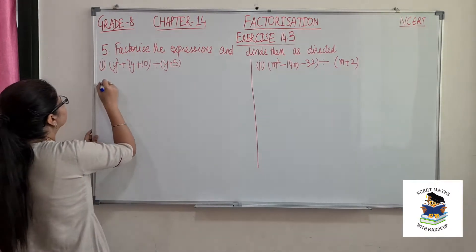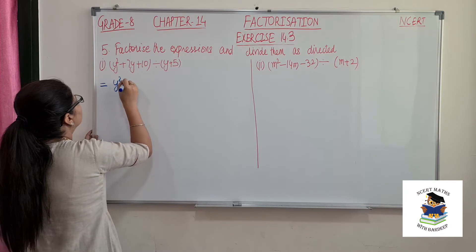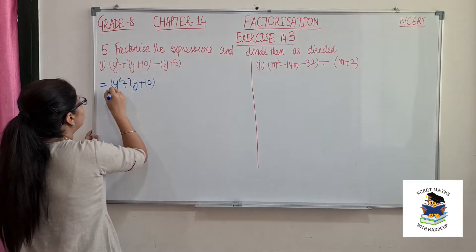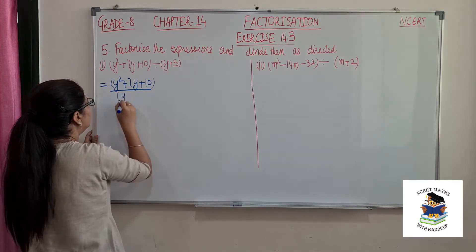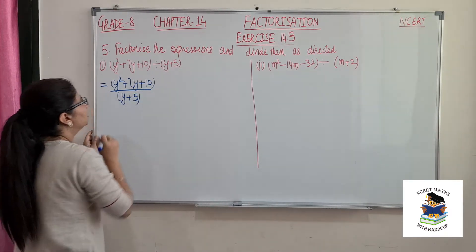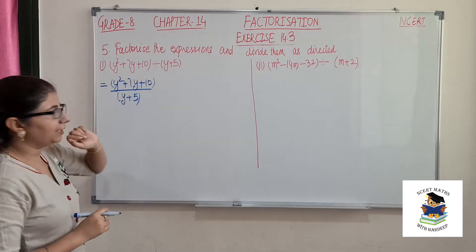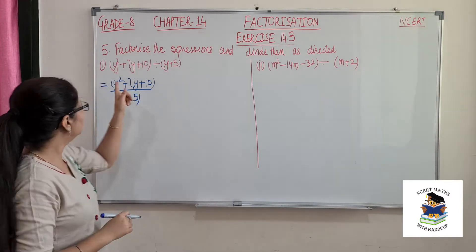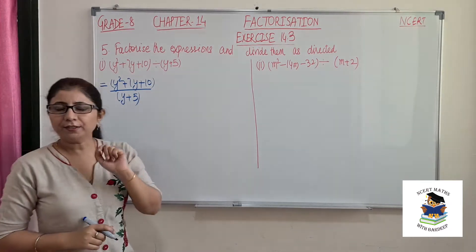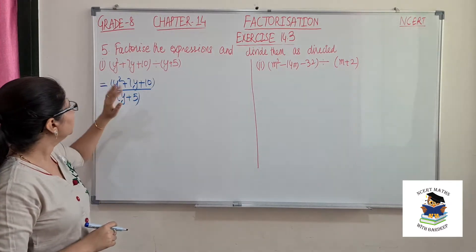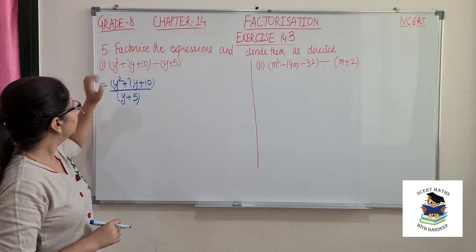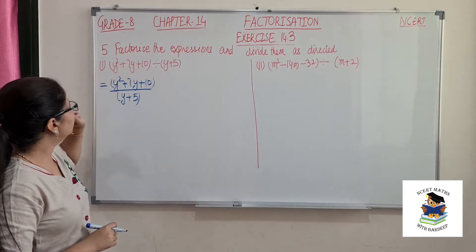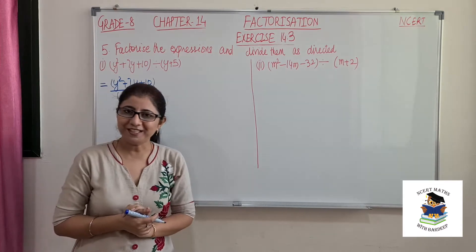The first one is y squared plus 7y plus 10 over y plus 5. So first we should factorize the numerator. We can see there are three terms, so grouping is not possible. A common factor is also not there, and it is not a perfect square identity. So we will use split the middle term.